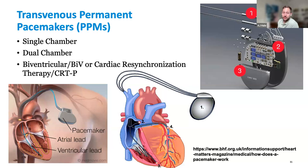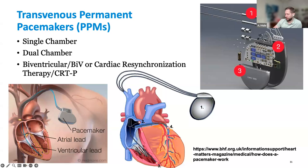Dr. Dotho is asking about temporary pacing. Temporary pacemakers are used as a bridge — say a patient won't need a permanent pacemaker, but may need support for a short period. You can float a temporary pacing lead in using IJ access or inferior access and thread the lead down. It acts very similarly to a permanent implanted device.